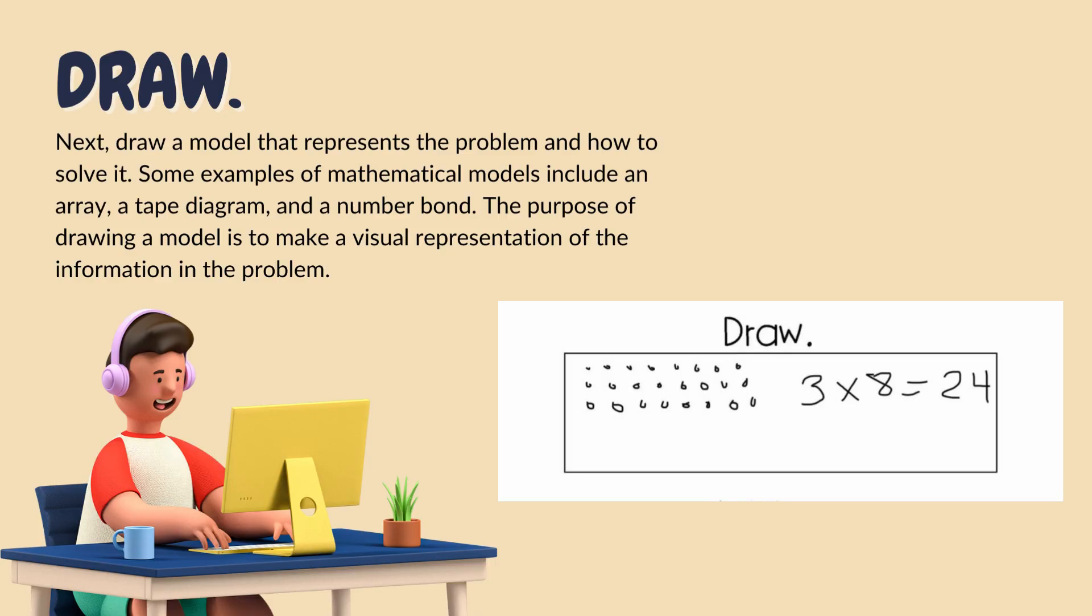The next letter in RDW is D for draw. In this step, you'll draw a model that represents the problem and how to solve it. Remember, there were three rows of eight. So I've drawn an array with three rows and eight in each row. And I've also written a multiplication equation. Three times eight equals 24. The purpose of drawing a model is to make a visual representation of the information in the problem.